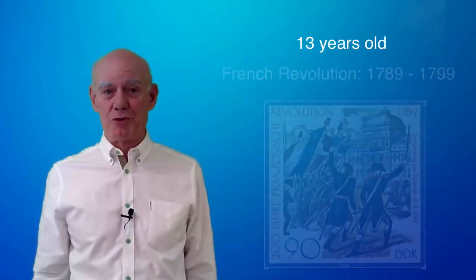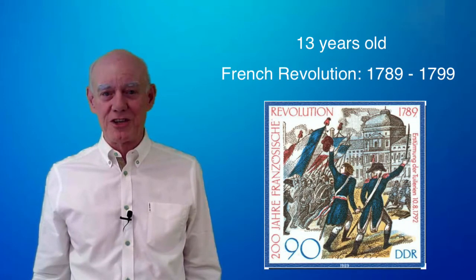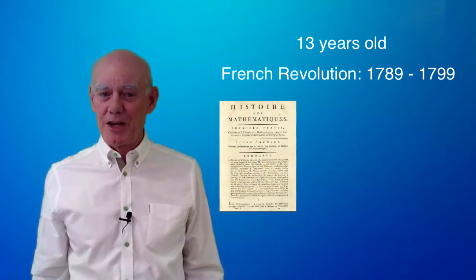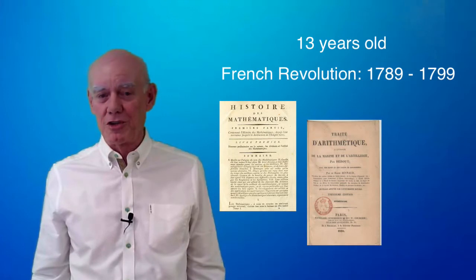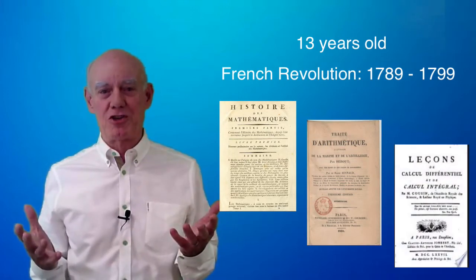When Sophie was 13 years old, the French Revolution broke out. She had to shelter at home because it was too dangerous to go outside. Sound familiar? Her parents had an extensive library and to pass the time, she began looking through the books there. She became fascinated with mathematics and mathematicians.